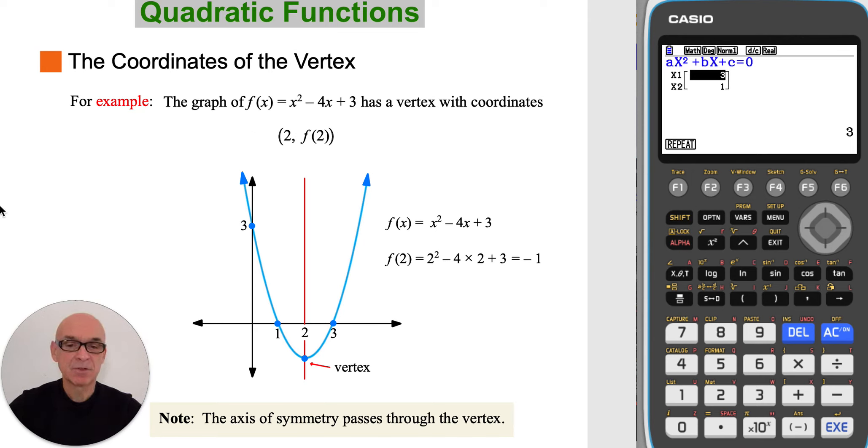Remembering that the axis of symmetry also passes through the vertex, the coordinates of the vertex will be 2 comma f of 2. And since f of 2 is equal to negative 1, the vertex will have coordinates 2 comma negative 1.